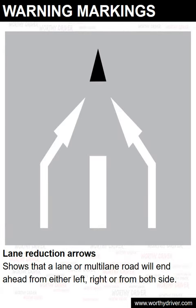Lane reduction arrows. This marking shows that a lane or multi-lane road will end ahead from either left, right, or from both sides.